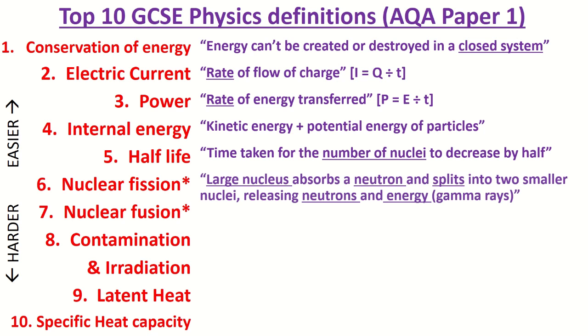Half-life — this is usually two marks if it comes up — is the time taken for the number of nuclei in a sample to decrease by half. It could also be defined as the time for the activity or the count rate to decrease by half.